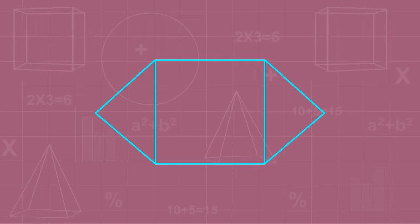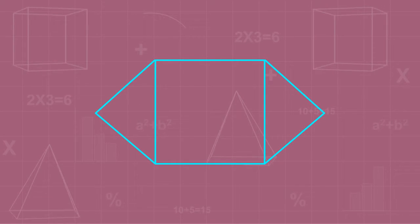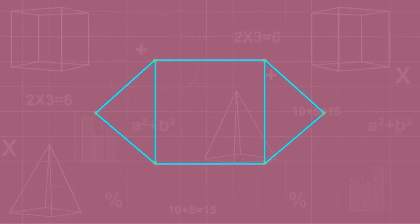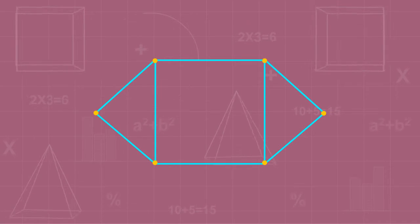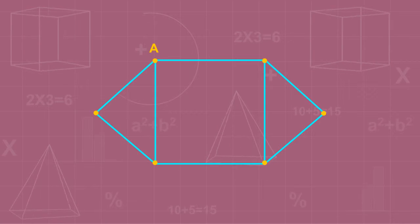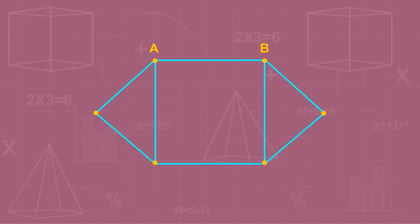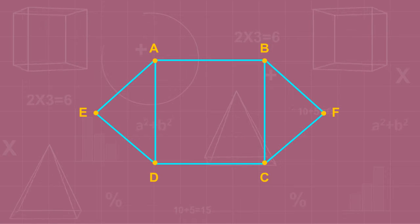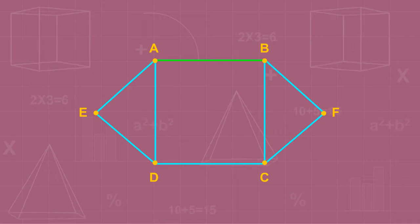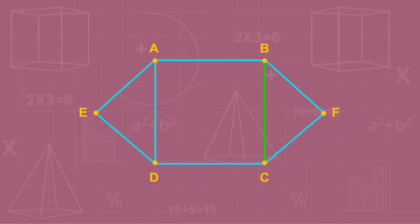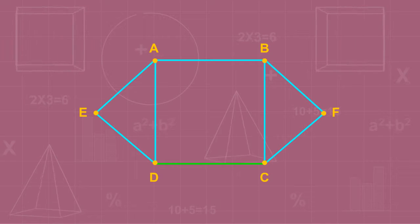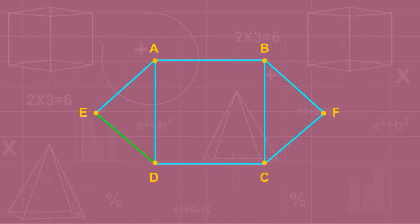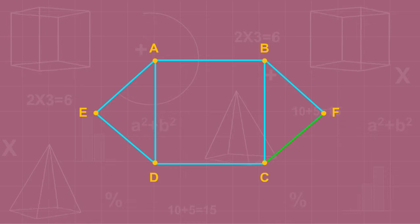Let's find the points and line segments in the given figure. We can see that there are six points: A, B, F, C, D, and E. The line segments are AB, BC, CD, DA, AE, ED, BF, and CF.